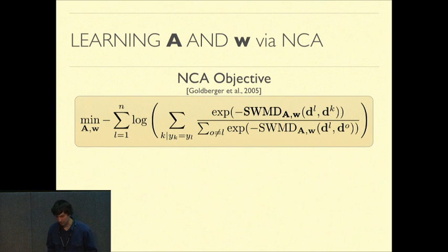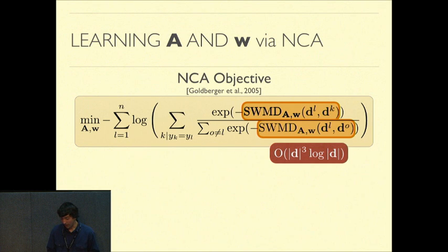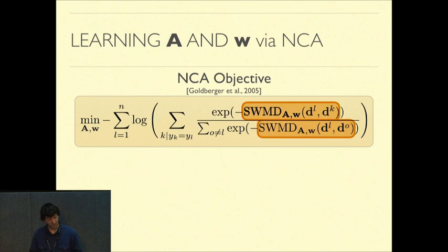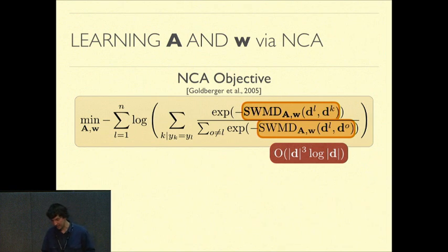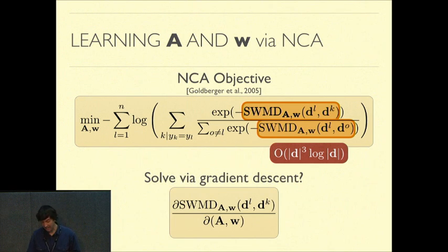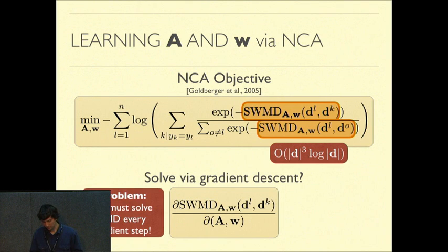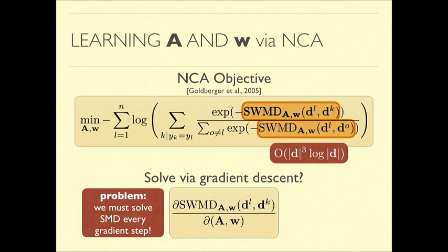Now the remaining question of the talk is how to learn this distance. And what we thought originally was why not just take one of the metric learning techniques I showed you, NCA, and plug in the supervised word movers distance in place of the Euclidean distance. And then why not solve this with gradient descent? The immediate problem we run into is solving this optimal transport problem is cubic in the number of unique words in a document. And so if we think about trying to update A and W with gradient descent, we sort of start to despair because we have to compute this optimal transport problem every gradient step.